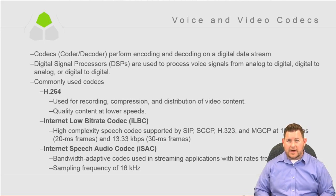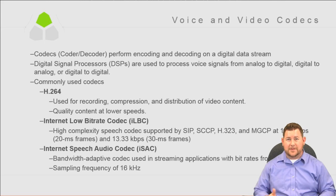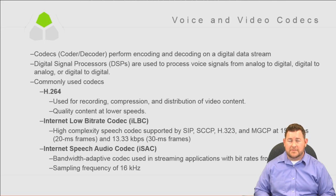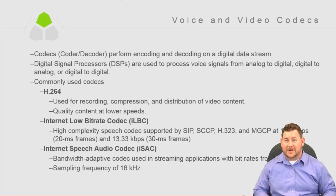Internet Speech Audio Codec, which is iSAC, is a bandwidth-adaptive codec for streaming applications with bit rates from 10 to 32K and a sampling frequency of 16 kilohertz. I'm going to draw what sampling rate and frequency mean so we understand these numbers beyond just kilobits per second — things like sampling frequency, bit depth, and audio engineering concepts are useful to understand how a codec actually works.